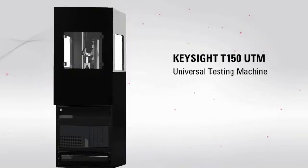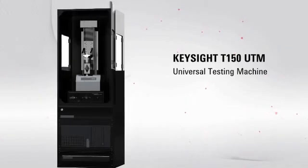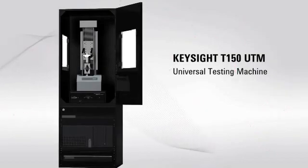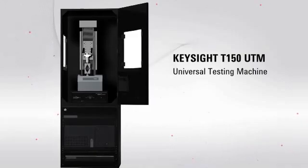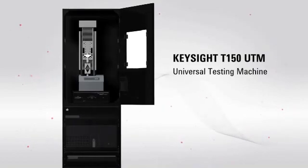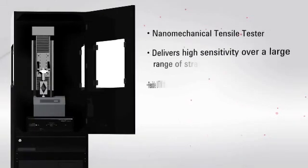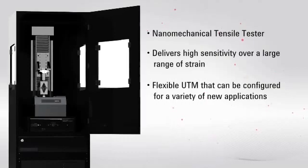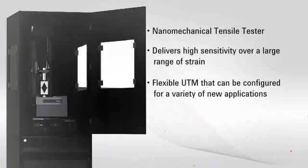This is the Keysight T150 Universal Testing Machine, or T150 UTM. Newly improved, the T150 UTM now features a relatively small footprint for such a powerful and versatile tool. All of the system's electronics are contained in a rack-mount cabinet, and the testing instrument itself is housed atop the electronics in a user-friendly enclosure. The instrument enclosure has been newly redesigned to offer the utmost ease in user interaction. Windows located on the front and sides of the enclosure give users a clear view of the experiment as it is being performed.